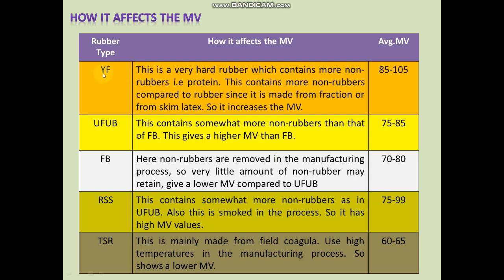First, let's look at the yellow fraction. This is a very hard rubber; it contains non-rubbers such as proteins in the form of tiny particles, which increase its stiffness and hardness. Compared to other rubber types, yellow fraction contains somewhat less rubber content because it is mainly made from skin latex and fractions taken from the fractionated bleached crepe rubber manufacturing process. Normally, the average Mooney viscosity of yellow fraction ranges from 85 to 105 Mooney units.